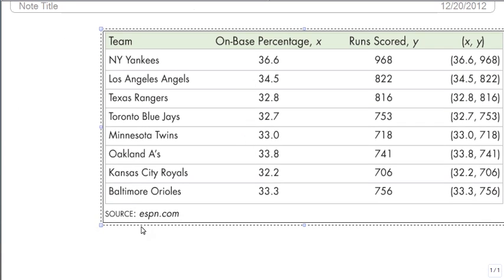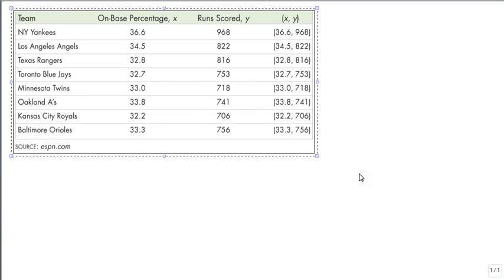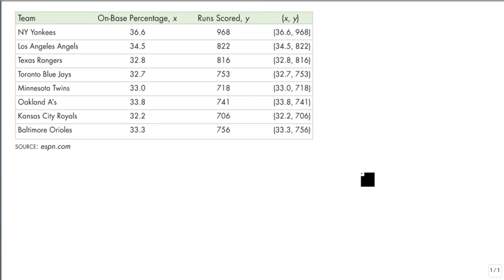So we're going to start with an example from baseball. Here's some baseball teams and what their on-base percentage is versus how many points they score. What you'd expect is they get more people on base, they have a better chance of scoring more points. That's what we want to see, is we want to see if that's actually true.